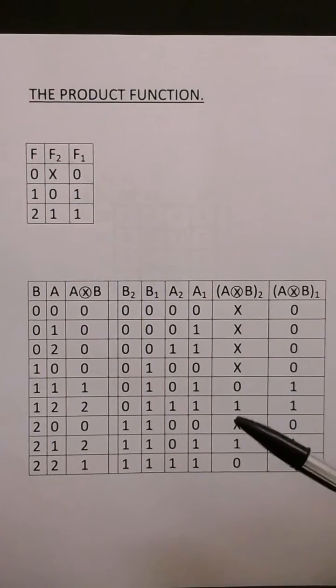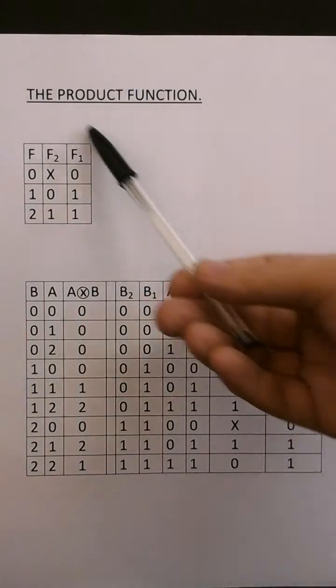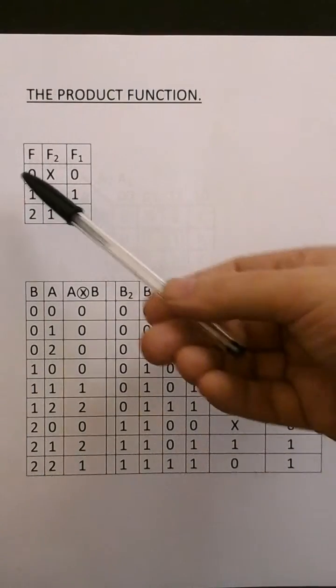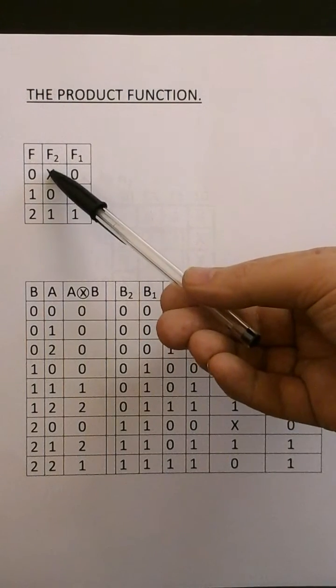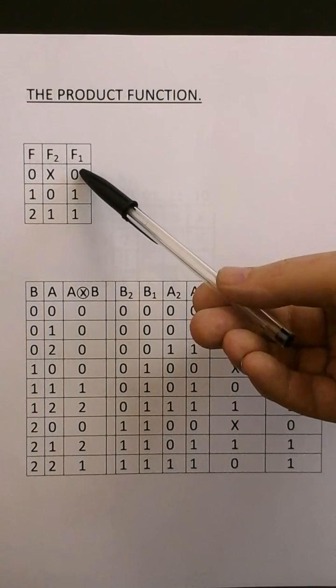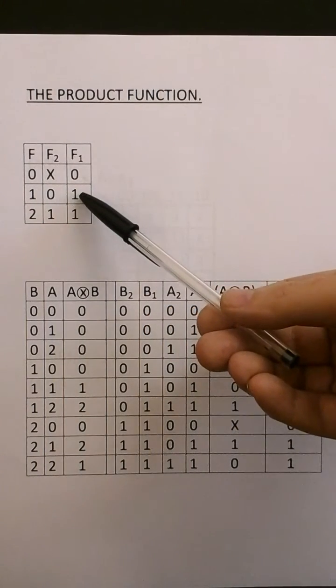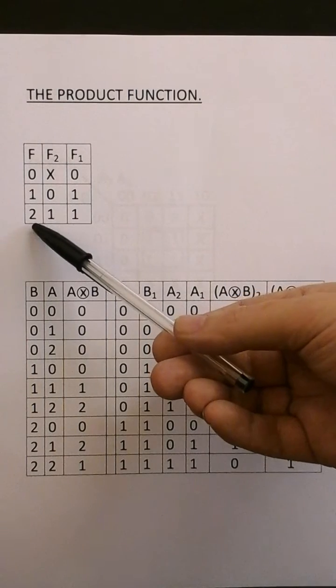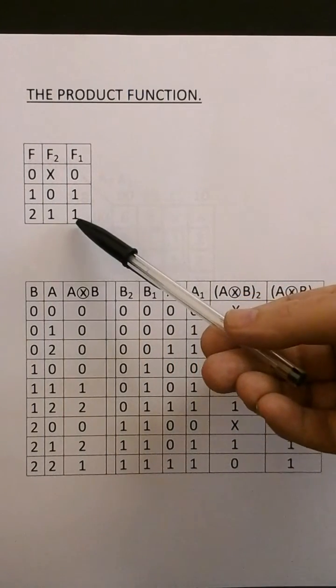Here we have the coding for the product function. We have the output coding. Ternary logic 0: F2 is a don't care state and F1 is 0. If F is 1, F2 is 0 and F1 is 1. If F is 2, F2 is 1 and F1 is 1.